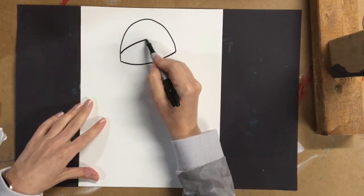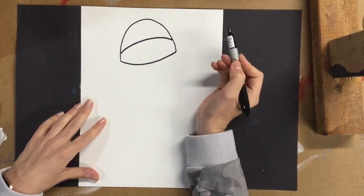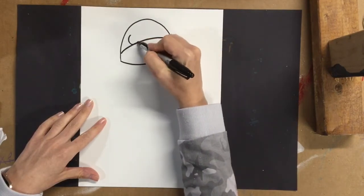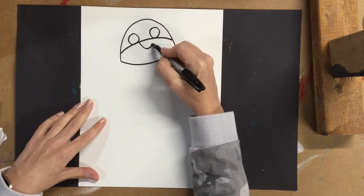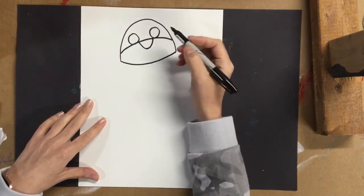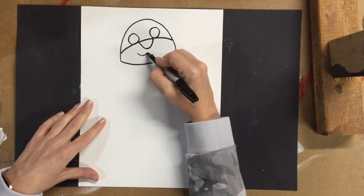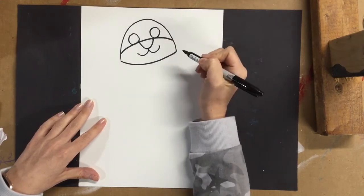Inside here, that's a line for his face. One eye, two eye. His nose is another U-shape. And then we've got a W for his mouth.